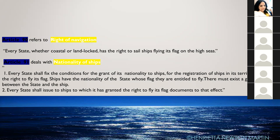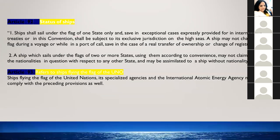Every state shall issue to ships to which it has granted the right to fly its flag documents to that effect. Every ship must carry the flag of the country to which it belongs, along with all relevant documents speaking to the nationality, registration, and the territory from which it has come. Article 92 states that ships shall sail under the flag of one state only.